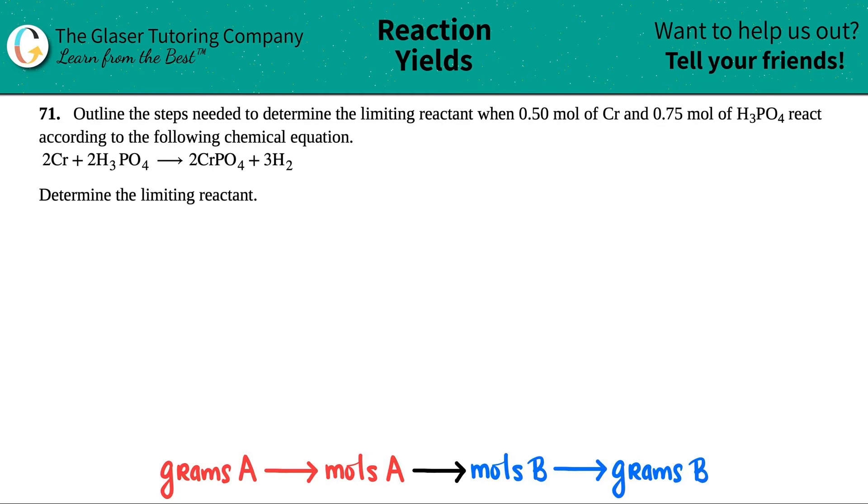Number 71. Outline the steps needed to determine the limiting reactant when 0.5 moles of chromium Cr and 0.75 moles of H3PO4, phosphoric acid, react according to the following chemical equation.